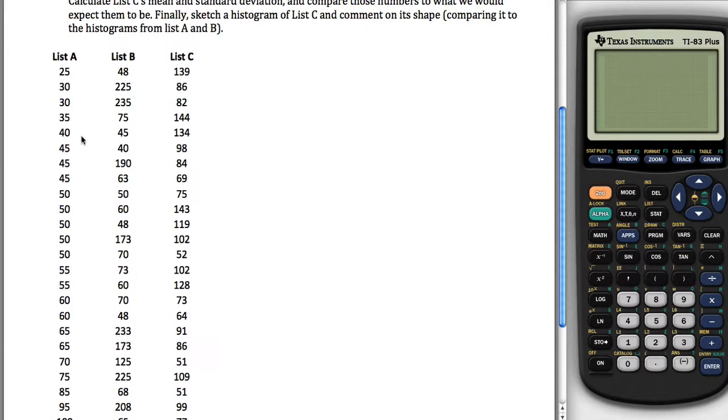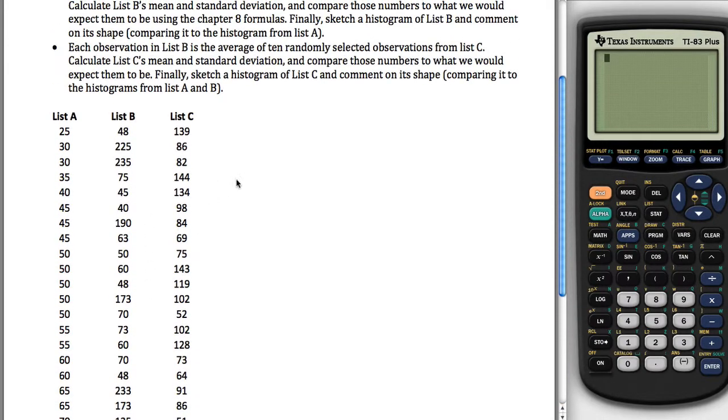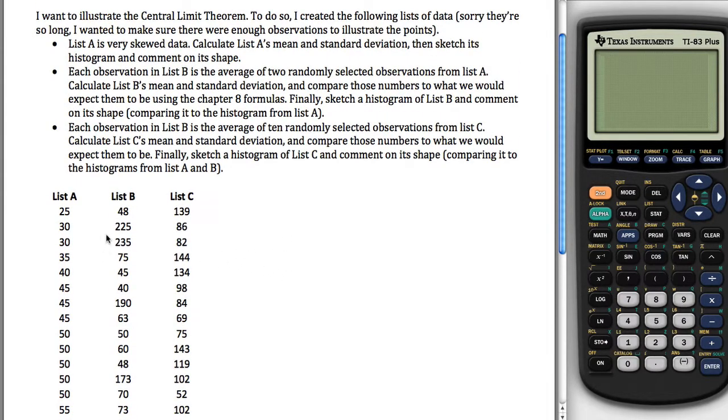And then with List C, what I did is I randomly selected ten of these guys and averaged those out, and that went here. Randomly selected ten again, that went here. Randomly selected ten again, that went here. And I kept doing that until I had, I think it's 30 of each of these observations. So the idea of this problem is we want to compute the mean, standard deviation, and look at the shape of each of these three lists. Really, the worst part about this problem is just entering all the data.